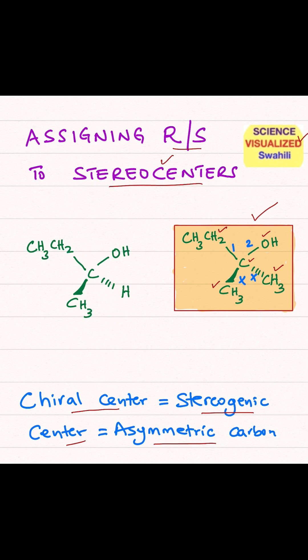Next, we're going to look at how to assign the R and S configuration to the stereocenter, and we use what's called the Cahn-Ingold-Prelog system.